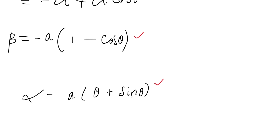So the elimination is complete. We have the center of curvature coordinates α and β. The locus of the center of curvature is the evolute. So taking the locus of α and β gives us the equation of the evolute.